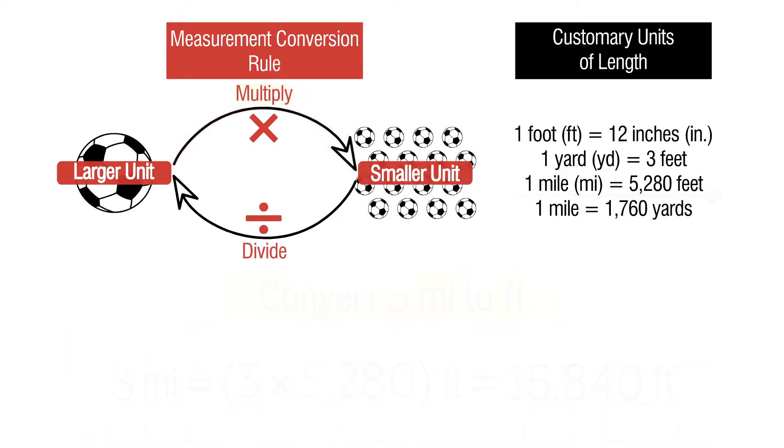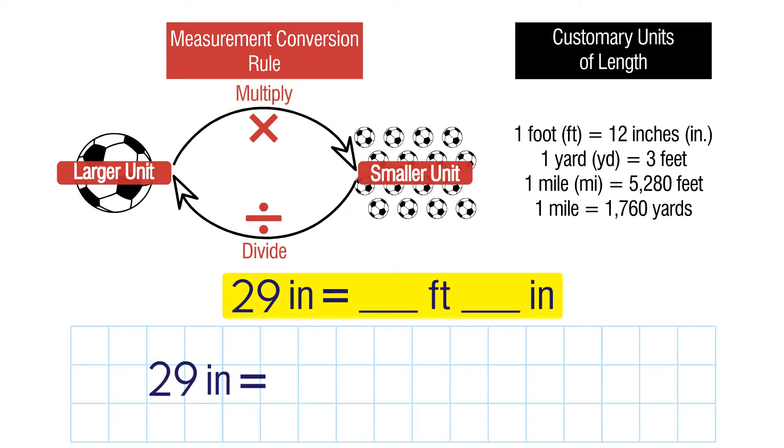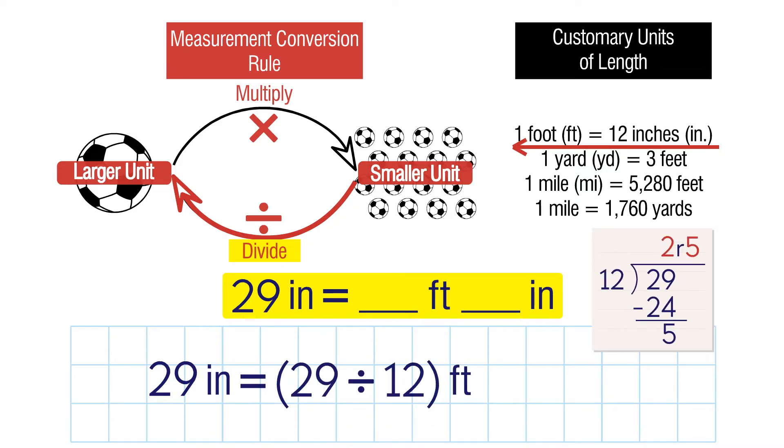Let's try another example. Convert 29 inches into feet and inches. We're going from smaller units to larger units, so we need to divide. There are 12 inches in 1 foot, so we divide 29 by 12. We solve by using long division. We get 2 remainder 5. The 2 tells us the number of feet. The remainder, 5, tells us the extra inches. So 29 inches equals 2 feet and 5 inches.